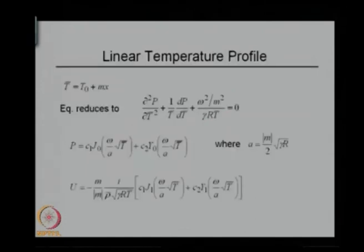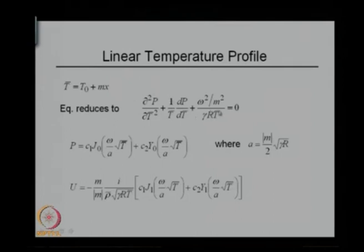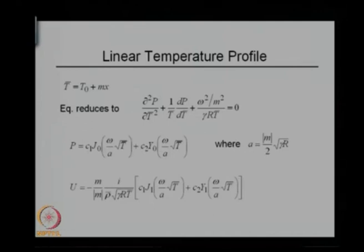We will look at the simplest temperature profile — the linear temperature profile. We say T-bar equals T-naught plus m times x, where m is a constant (the slope) and T-naught is another constant. I rewrote the equation replacing x by T. This works if you have a monotonic function; if temperature goes up and falls down, you have to do it in two segments. For a monotonic function, this differential equation has a solution which is c₁ times J-naught of omega over a times square root of T-bar, plus c₂ times Y-naught of omega over a times square root of T.